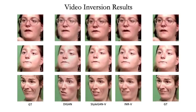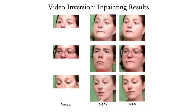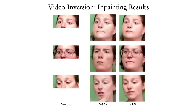Next, we look at inversion with half context. This is not possible with StyleGANV. DiGAN fails to regress to the correct identity in many cases — in the second case, one can clearly spot the mismatch in identity, and in the third case, there is a clear mismatch in motion. INRV, on the other hand, is able to regress to the correct identity with fine details like spectacles, and also captures the pose correctly as per the top half of the video.